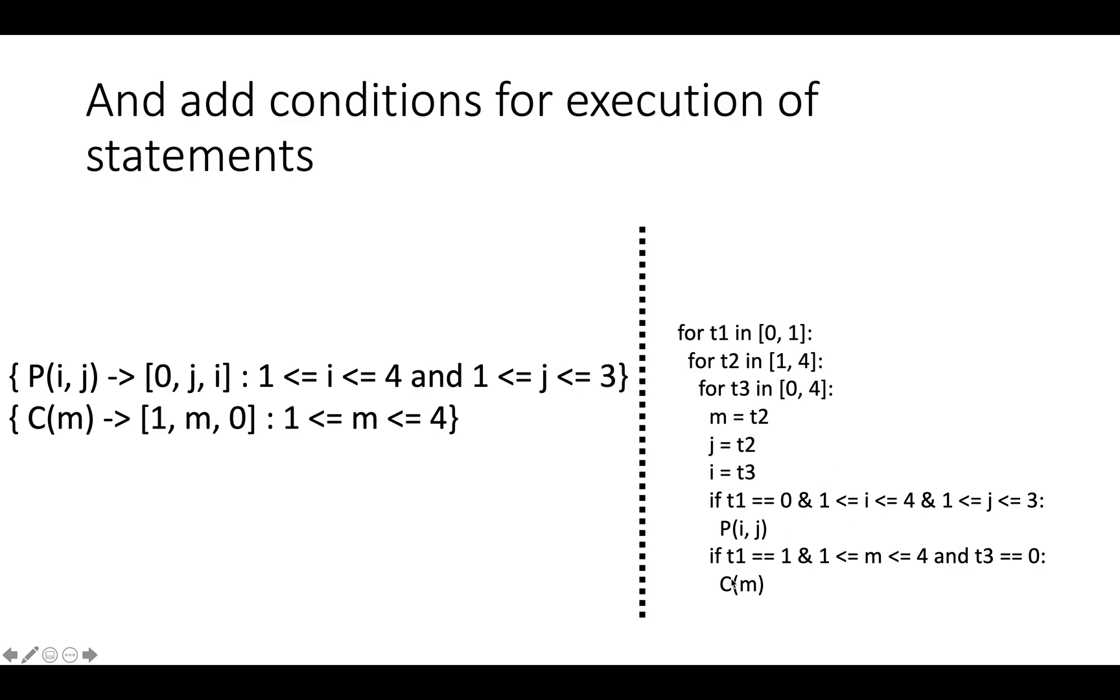And then similarly, C(m) is scheduled for timestamp 1,m,0, which means that t1 must be equal to 1, 1 must be less than or equal to m and less than or equal to 4, and then t3 must be equal to 0. And this is our final code.